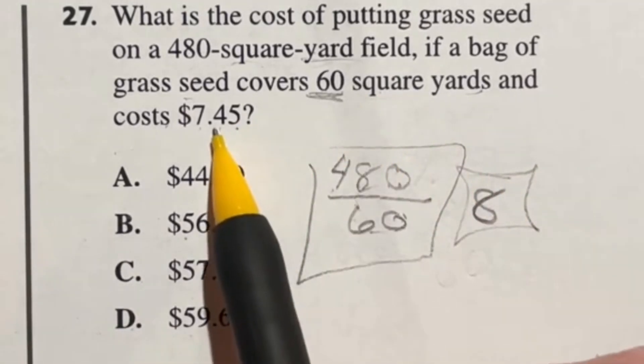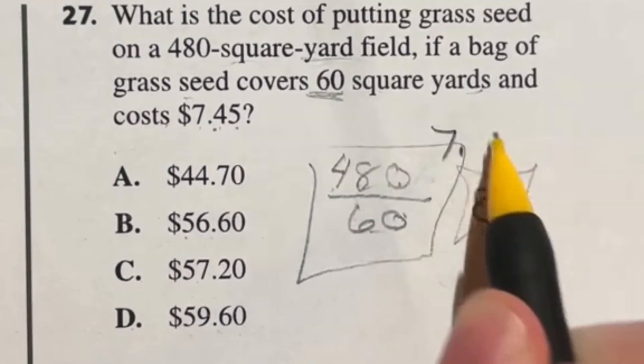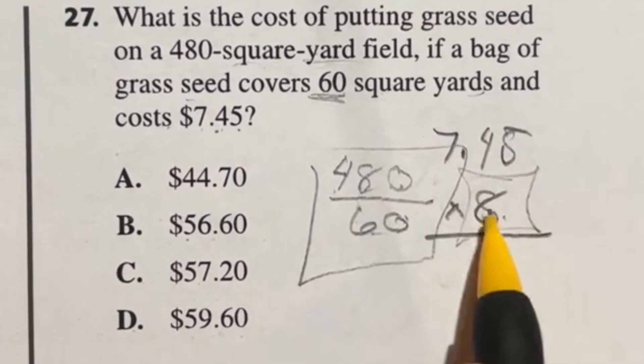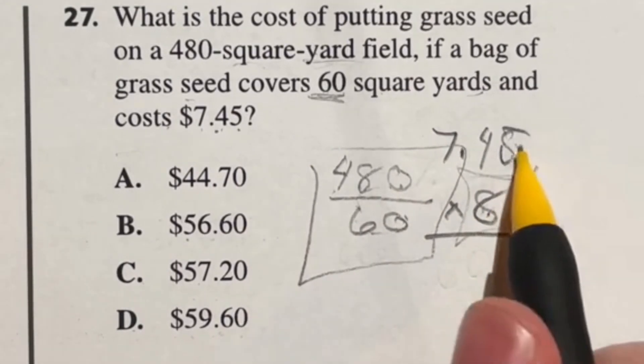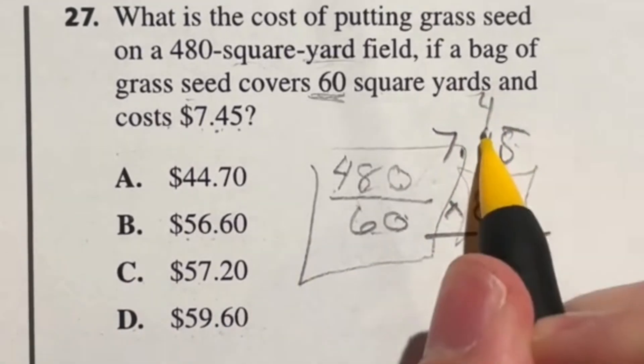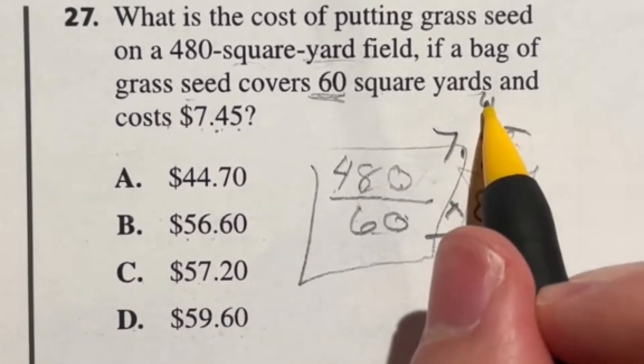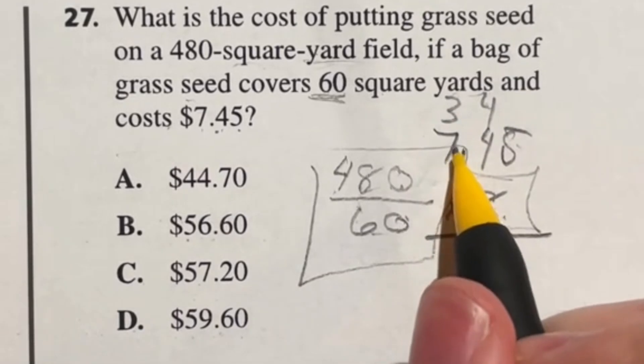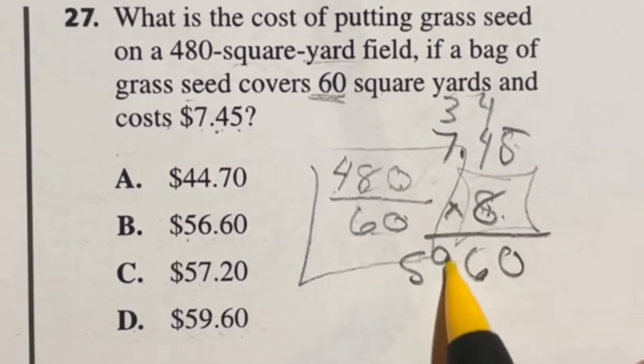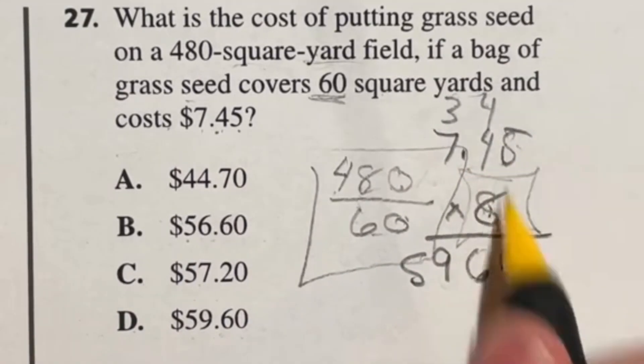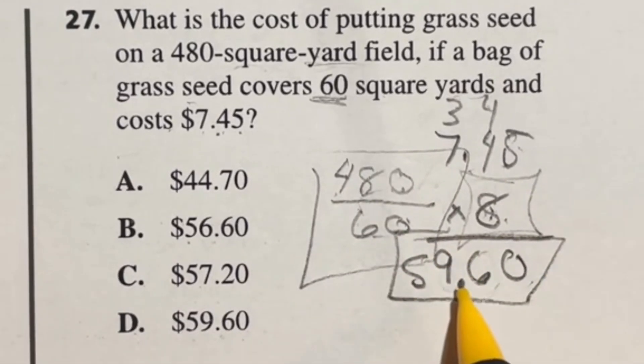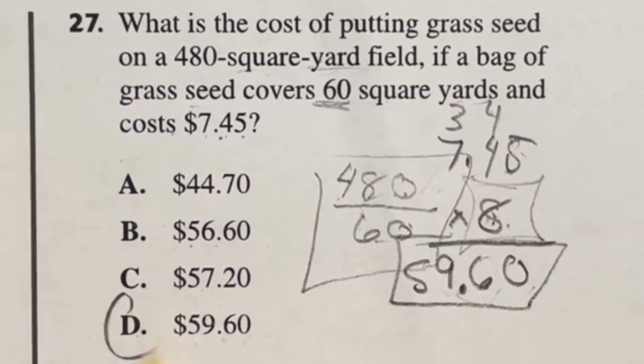It's $7.45 per bag. So we have 7.45 and we're multiplying that by 8 because we have 8 bags. Let's do this the long way because we don't have a calculator for the ASVAB. 8 times 5 is 40, carry the 4. 8 times 4 is 32, plus 4 more is 36. 8 times 7 is 56 plus 3 is 59. We have two numbers past the decimal so we move it over twice, meaning our final answer is $59.60, which is answer D.